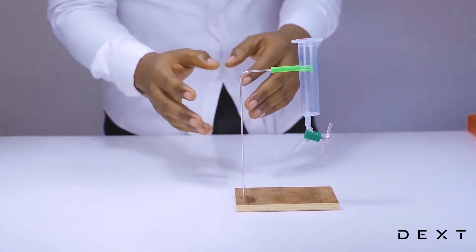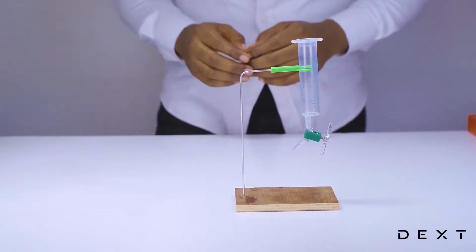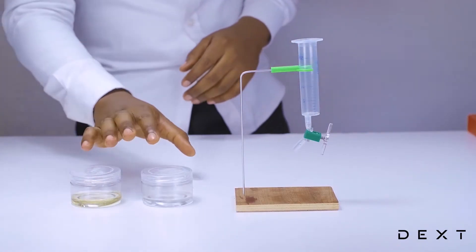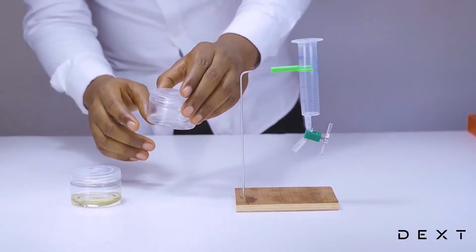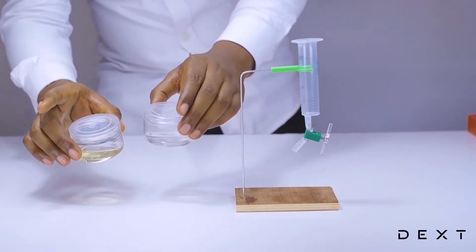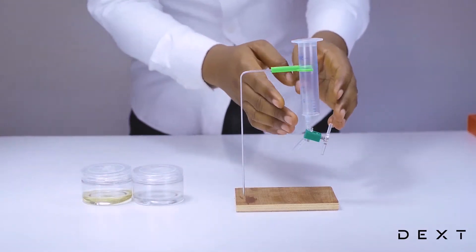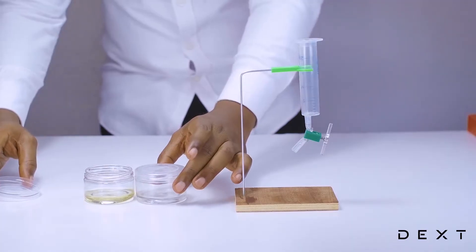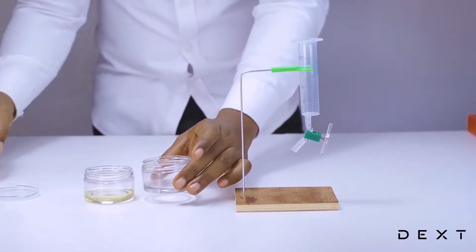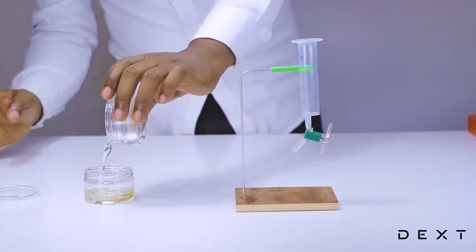Now that we have our setup done, we are going to bring in some liquids. So we have some water and some oil that we are going to use. We are going to mix these two up in the right proportions. And then try and separate them using the improvised separating funnel. So we simply pour the water into the oil.